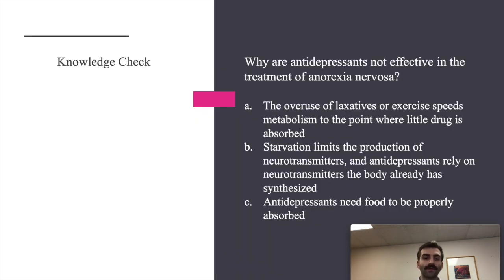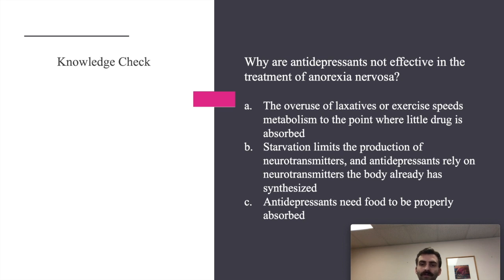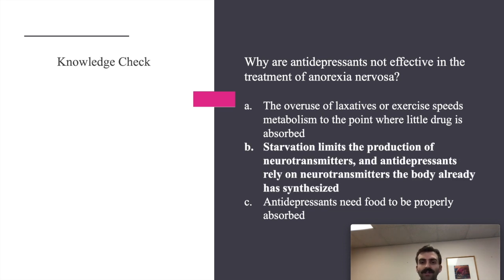Knowledge check: Why are antidepressants not effective in the treatment of anorexia nervosa? Option A: overuse of laxatives or exercise speeds metabolism so little drug is absorbed. Option B: starvation limits neurotransmitter production and antidepressants rely on neurotransmitters the body has already synthesized. Option C: antidepressants need food to be properly absorbed. The answer is B — starvation limits neurotransmitter production, and our medications, especially antidepressants, rely on neurotransmitters that have already been made to exert their effects.